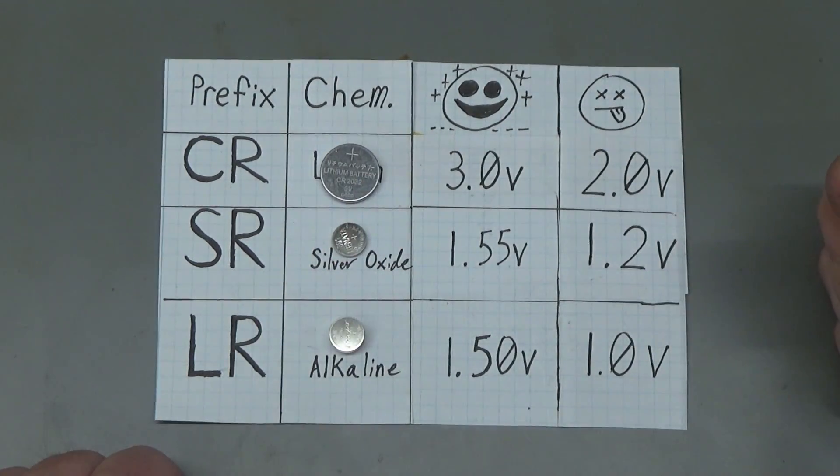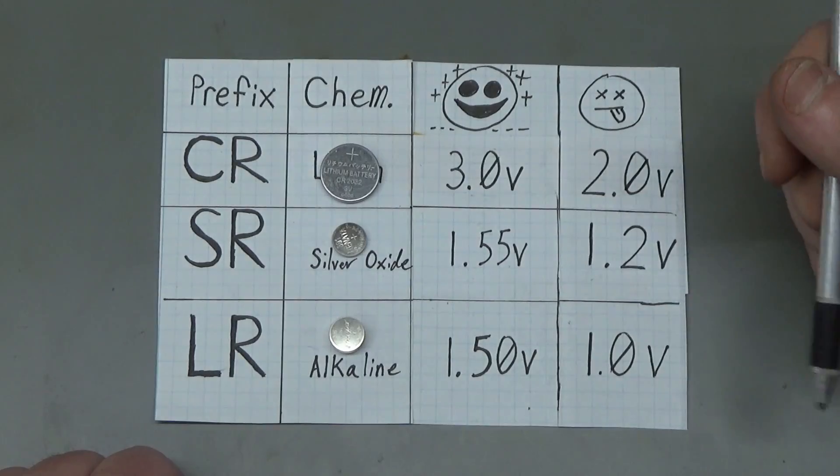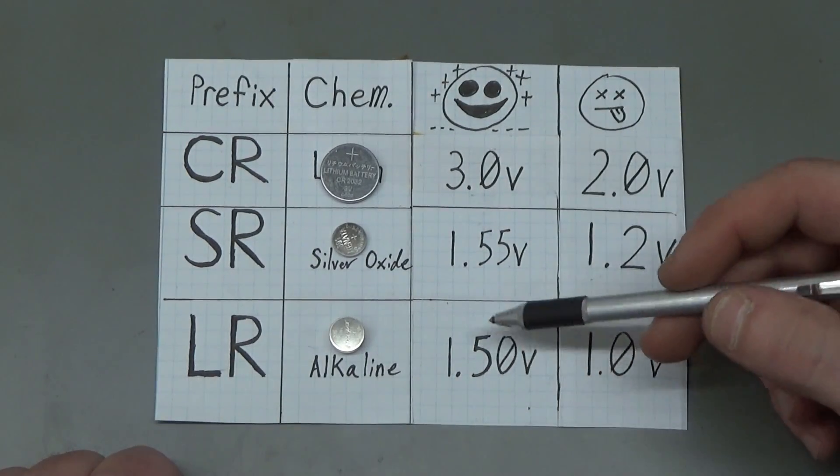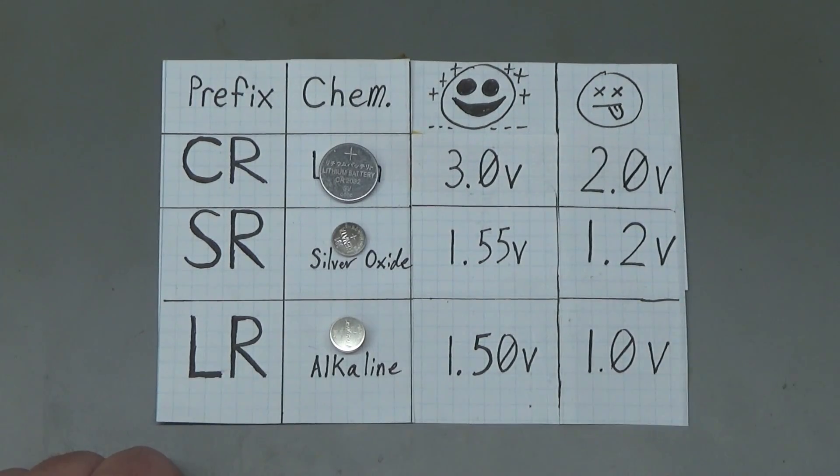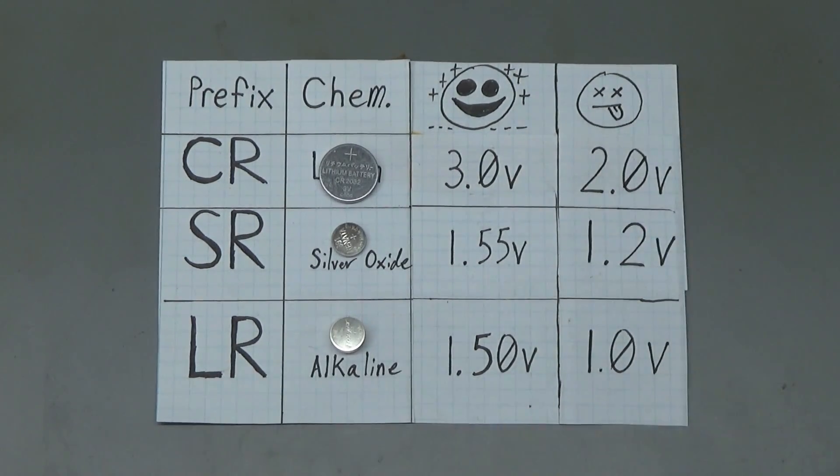And the last classification has the prefix LR—that is an alkaline cell. It has a nominal voltage of 1.50 volts, and when it reaches 1.0 volts, that is when it's dead and you're going to need to replace it.